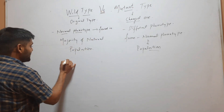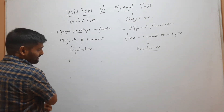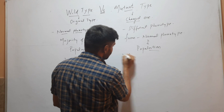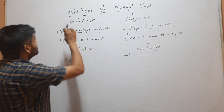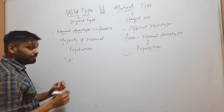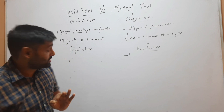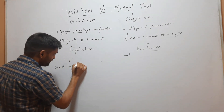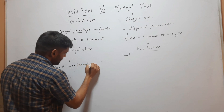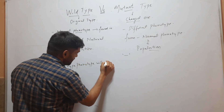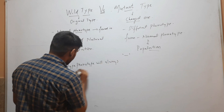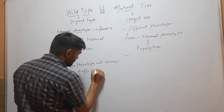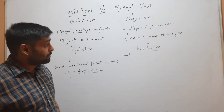This wild type is designated by a positive sign. And this mutant type is designated by a negative sign. This wild type phenotype is always single in a population.